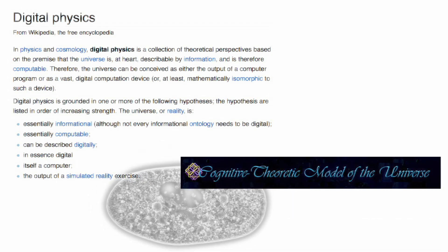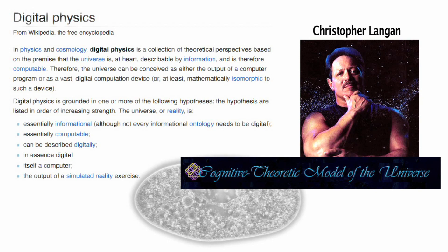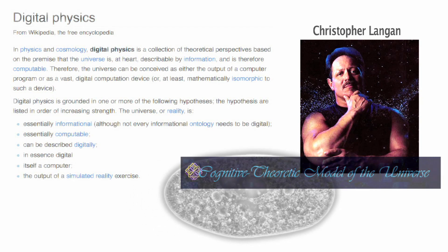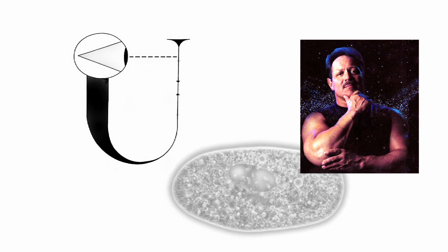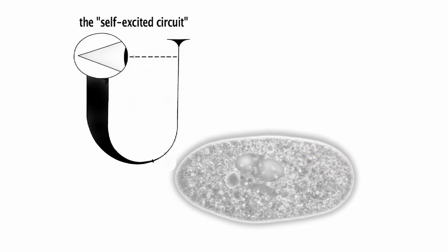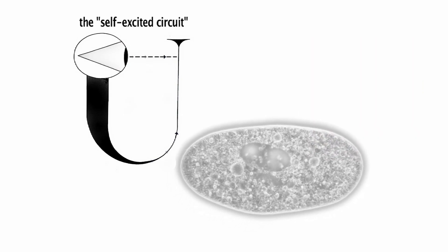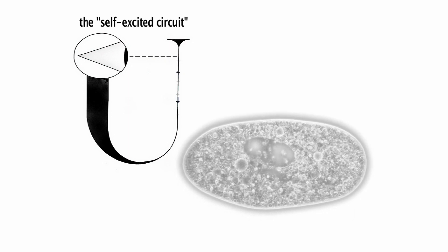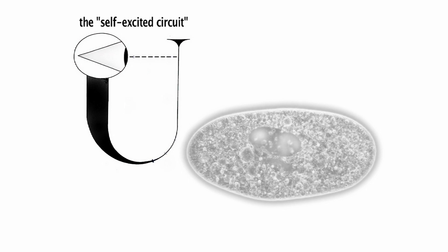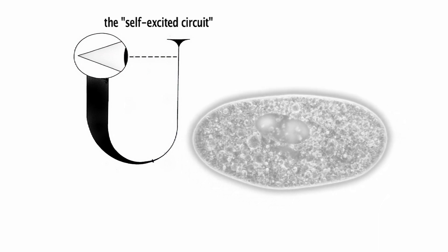As part of his cognitive-theoretic model of the universe, the CTMU, Christopher Langan, who some of you will know as the smartest man in America, has published an animated version of the simple drawing Wheeler created for his paper on the self-excited circuit, showing a U standing for universe, incorporating an eyeball representing the quantum observer, looking at its tail that represents the information side of the information equals reality concept that we talk about regularly with this project.